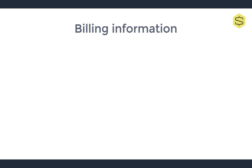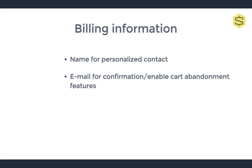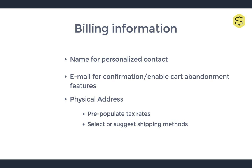You'll want the name of the client for personalized contact in the future. You'll want their email address for confirmation messages as well as enabling cart abandonment features. And you'll want the user's address early on in the process to proactively adjust tax rates for the shopping cart subtotal, and either pre-select or suggest shipping methods based on location. So with their address, you're able to pre-populate certain fields and adjust tax rates to make the checkout flow easier for the client. You could also use this location for geo-targeted promotions — for instance, if you found that 75% of your customers were shopping from the East Coast, it might change your marketing strategy.